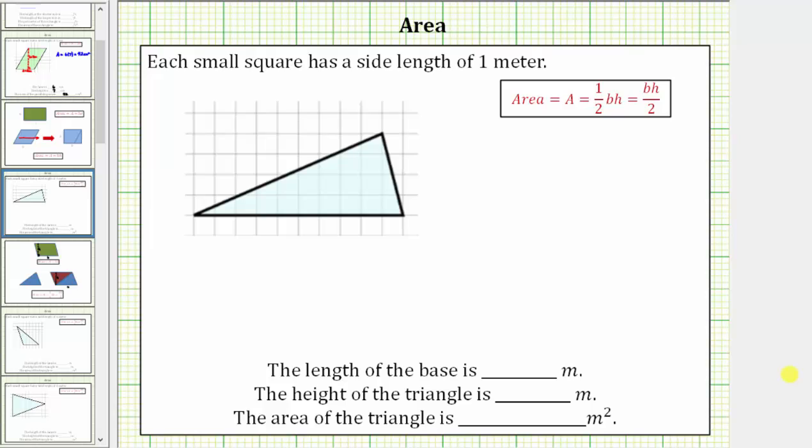We are given a triangle on a grid and we're told each small square on the grid has a side length of one meter. We are asked to determine the length of the base, the height, and the area of the triangle.